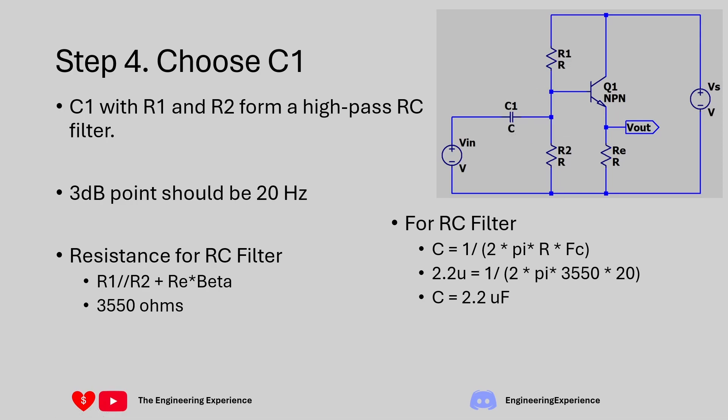If you look at C1, what that is essentially doing is making an RC filter with R1, R2 and RE or a function of RE. From the question, we know that we need to pass frequencies above 20 hertz to the output. So anything below 20 hertz, we want to attenuate or reduce in value. We're going to set the cutoff frequency of this filter to be 20 hertz at the 3 dB point.